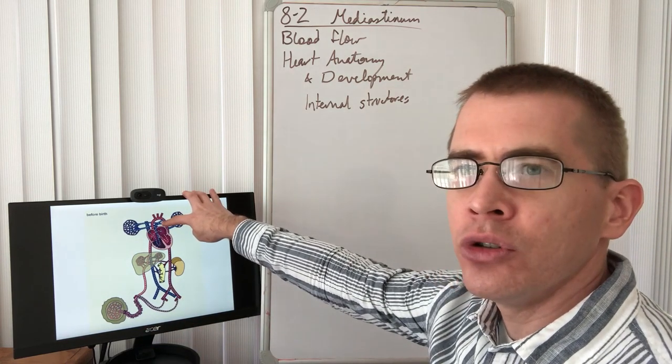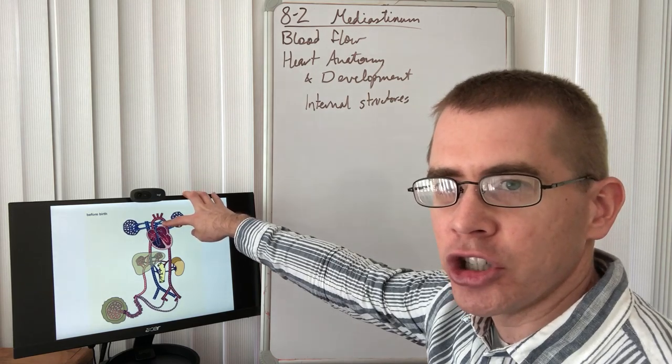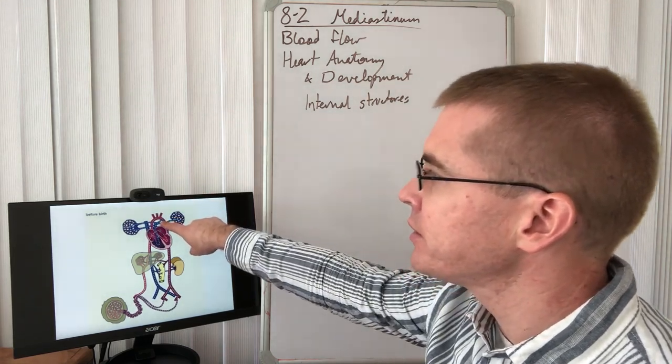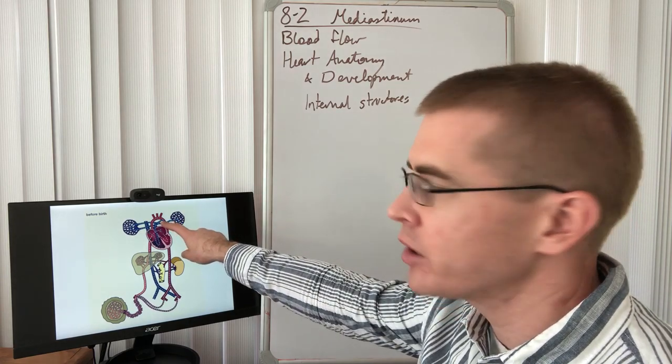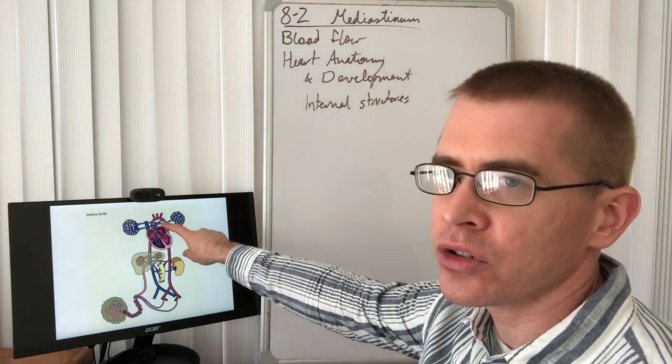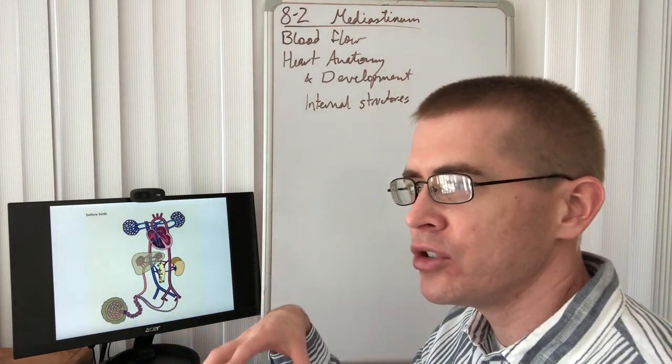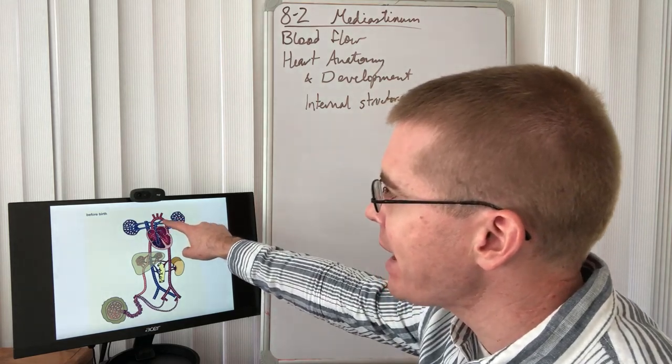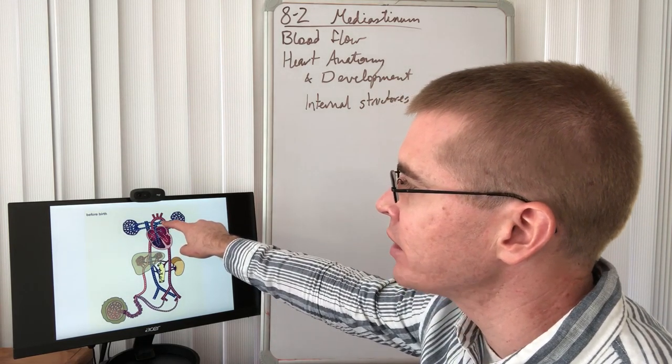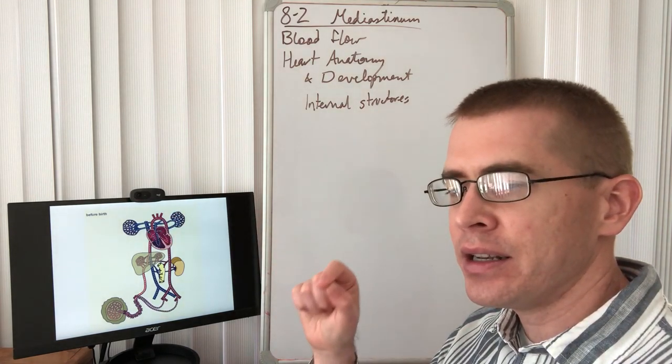Furthermore, we see a new little structure that we don't see in the adult. Actually, it degenerates in the adult. So this little structure is called the ductus arteriosus. Ductus arteriosus is another way that the lungs are bypassed as blood kind of passively flows into the pulmonary arteries. It can bypass the lungs by traveling through ductus arteriosus directly into the descending aorta.